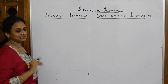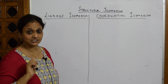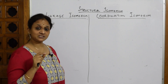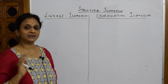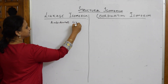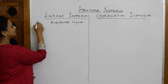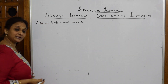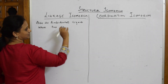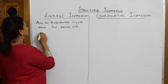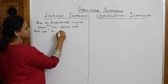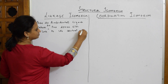To identify linkage isomerism, we refer back to a class of ligands — ambidentate ligands. Linkage isomerism arises due to ambidentate ligands, which have two donor sites. Both sites can link to the central metal atom.